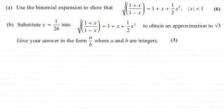Hi there. Now if you watched the previous video, I tackled this part of the question, part A, where we had to use the binomial expansion to show that the root of 1 plus x all divided by 1 minus x was approximately the same as 1 plus x plus a half x squared, for values of x, the modulus of x, being less than 1.